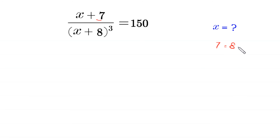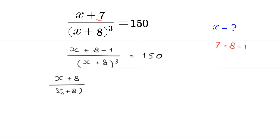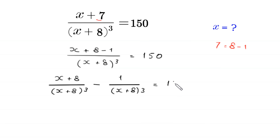We can write 7 as 8 minus 1, so the left-hand side becomes ((x + 8 − 1) / (x + 8))³ = 150. This expression can be split as (x+8)/(x+8) whole cubed minus 1/(x+8) whole cubed, which equals 150.